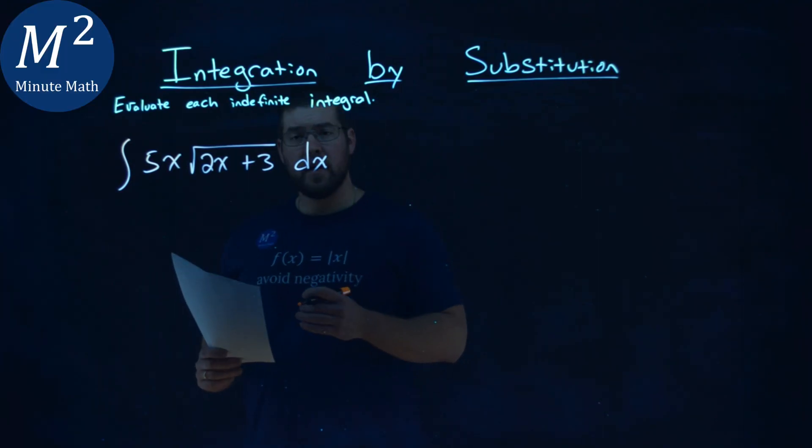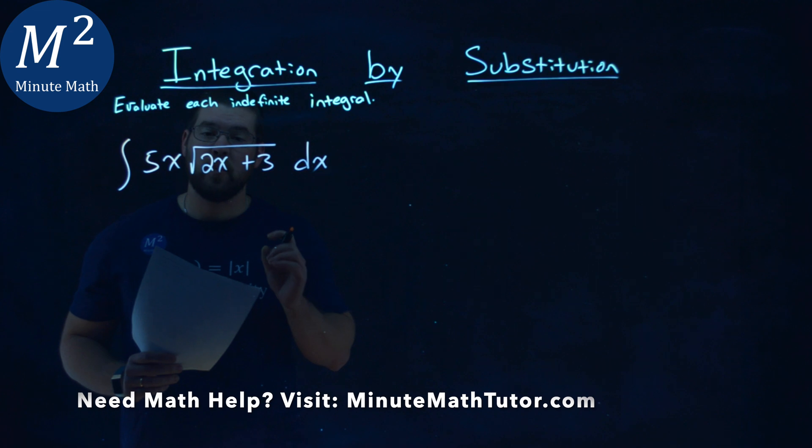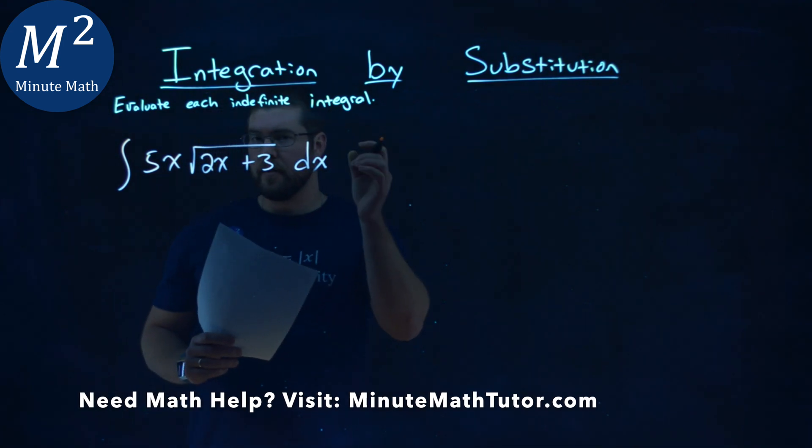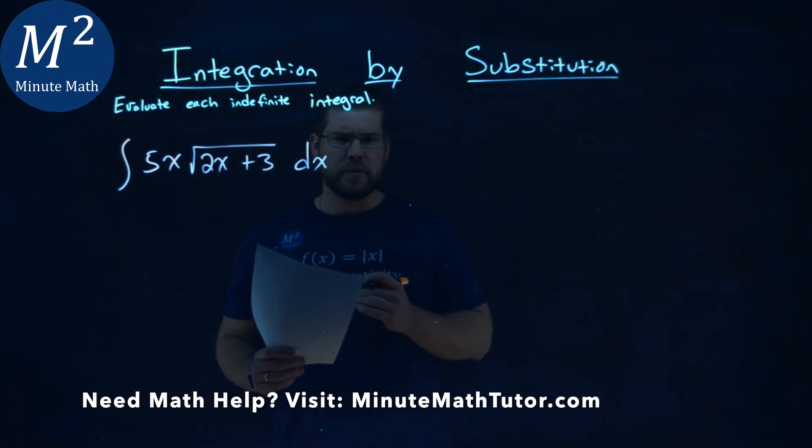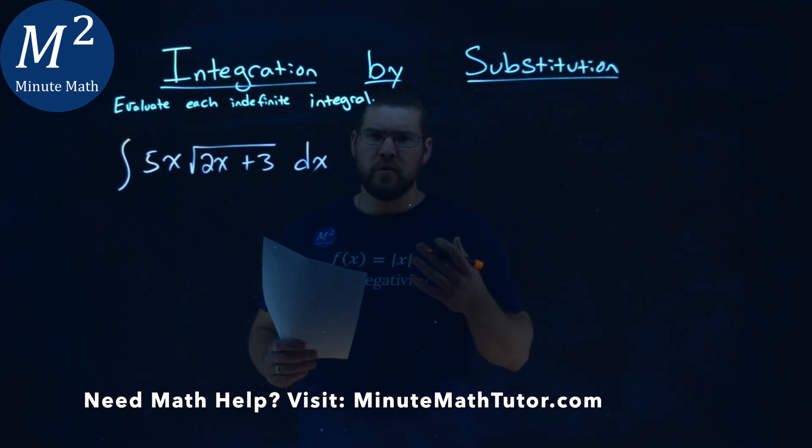We're given this problem right here, the integral of 5x times the square root of 2x plus 3 dx, and we want to evaluate this indefinite integral. Now, we're going to use some u substitution.